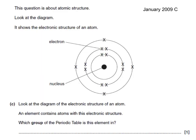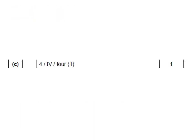Here's a past paper question on this topic. This question is about atomic structure. Look at the diagram. It shows the electronic structure of an atom. Element contains atoms with this electronic structure. Which group is it in? Well, we then look at the number of outer electrons. We can see it's got four outer electrons. And therefore, this would be in group four. And there's our answer, group four.